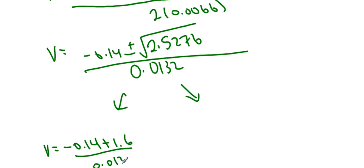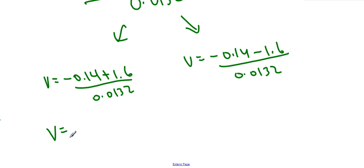over 0.0132, or v equals negative 0.14 minus 1.6. And again, calculator time please. Let's calculate both of these. So I get an answer of 110.6 kilometers per hour. Seems reasonable considering what we did in part a.